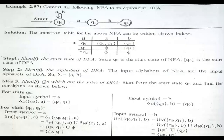Now we'll go to the first question: convert the following NFA to its equivalent DFA. To identify whether it is NFA or DFA — Q0 has multiple transitions for input a, so it is a pure NFA. This problem is about strings ending with AB, which we solved in a previous class. First, we draw a transition table for this NFA.